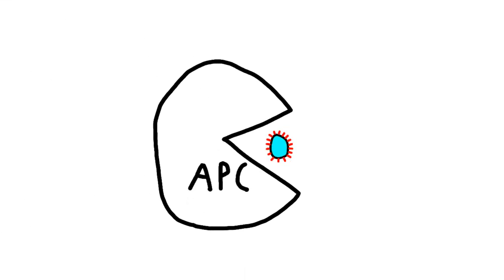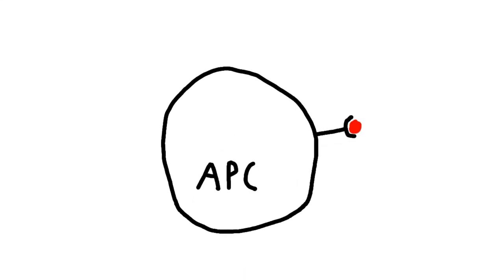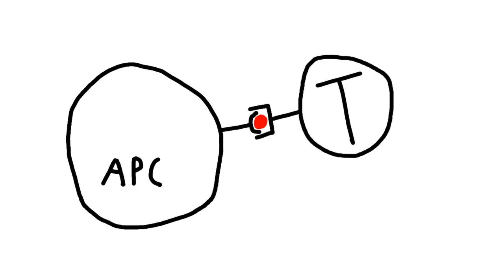A typical response begins with an antigen-presenting cell, which consumes a pathogen and presents an antigen from it. When a helper T-cell with a receptor for that antigen binds to it, it becomes activated.